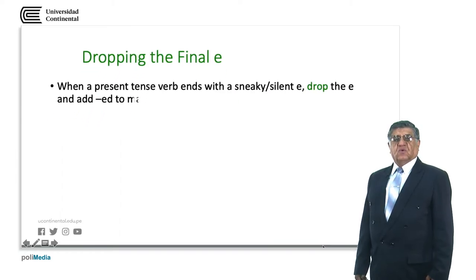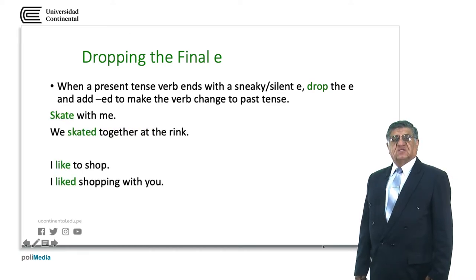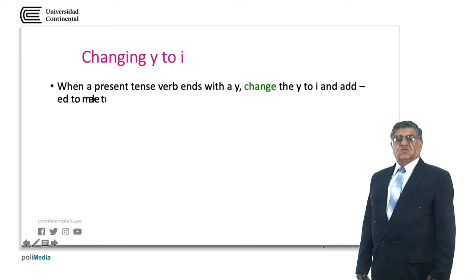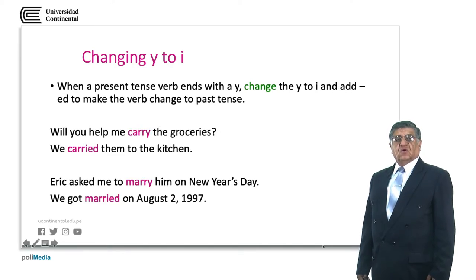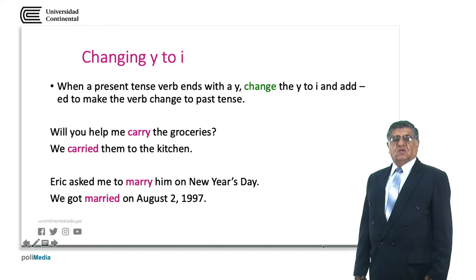When we just add D: 'We skate together' becomes 'We skated together' — we have just added D. 'I like to shop' — 'I liked shopping with you.' When we drop the Y and add IED: 'Will you help me carry the groceries?' becomes 'We carried them to the kitchen.' 'Carried' is the past tense form of 'carry.' Another example: 'Eric asked me to marry him on New Year's Day' — 'We got married on August 2nd, 1997.'